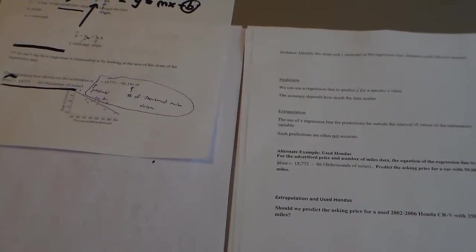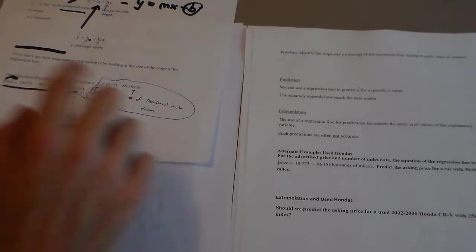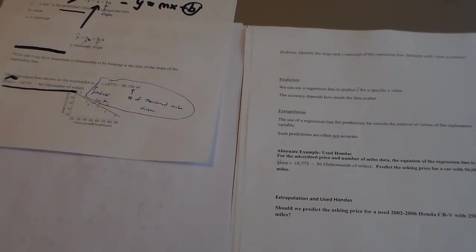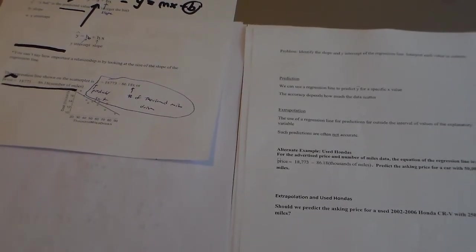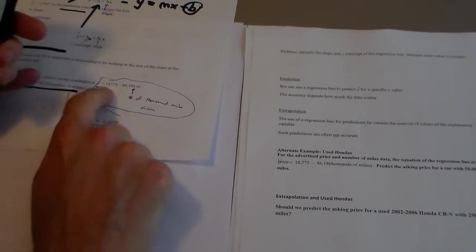It's called extrapolation, and that's when you try to use a regression line, but you end up making a prediction that's far outside the values, the interval of values for the explanatory variable.